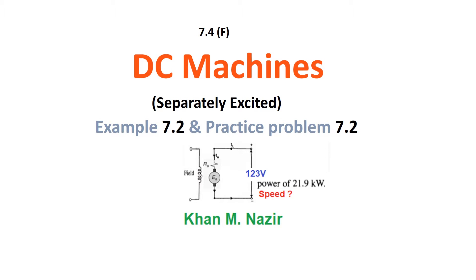Bismillahirrahmanirrahim. This is the second part of separately excited DC machines. In this, we'll primarily be solving example 7.2 which is solved in the book and we'll also solve practice problem 7.2.